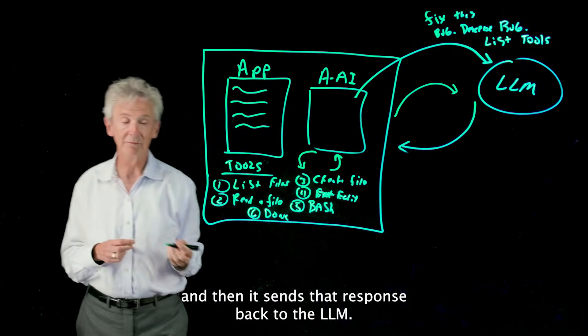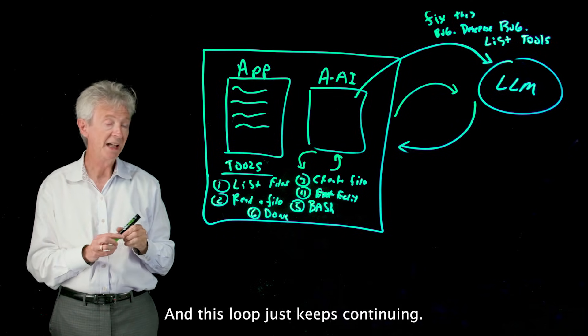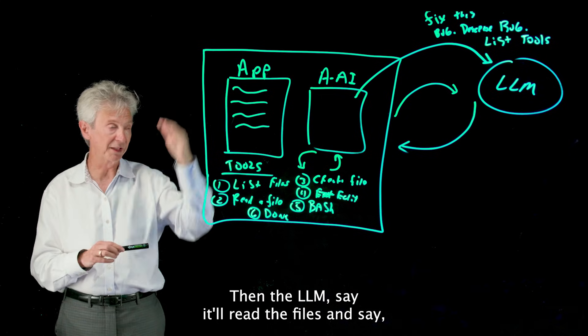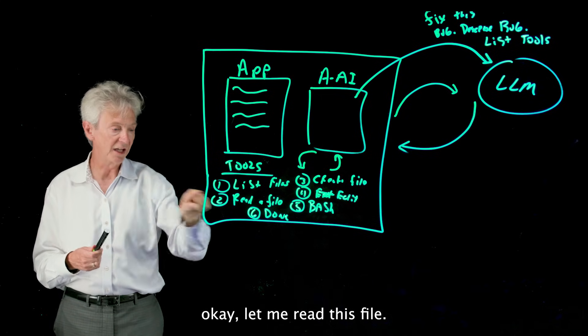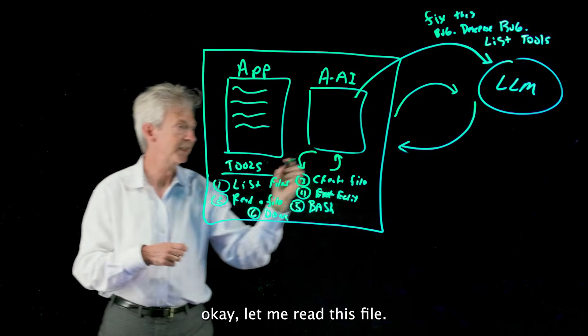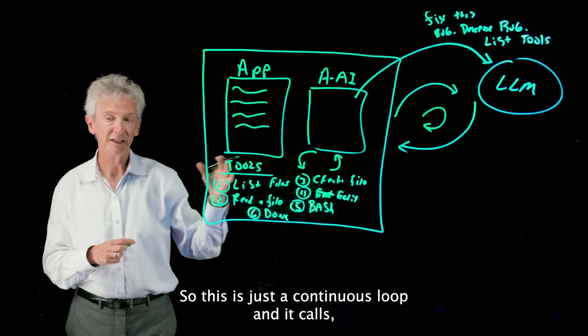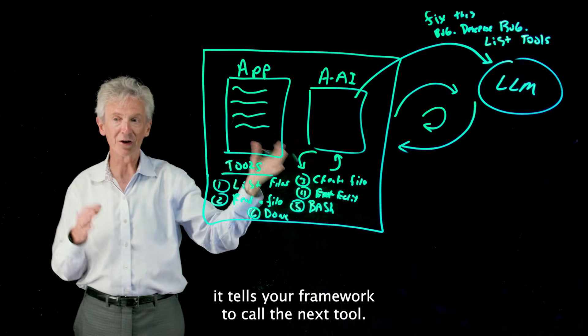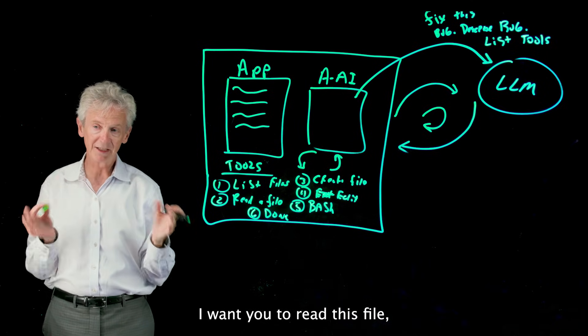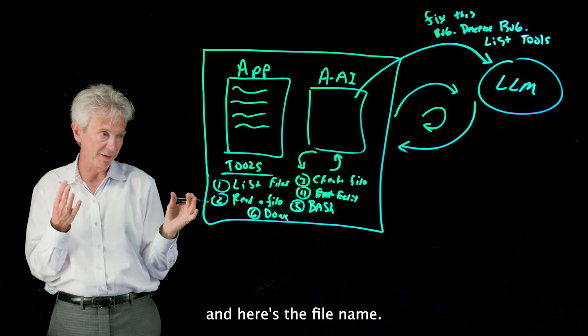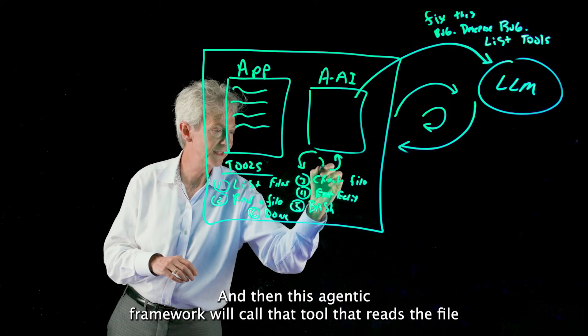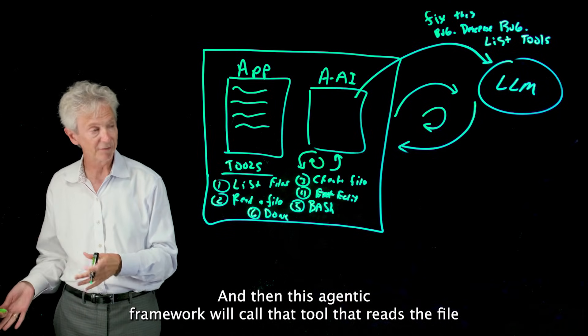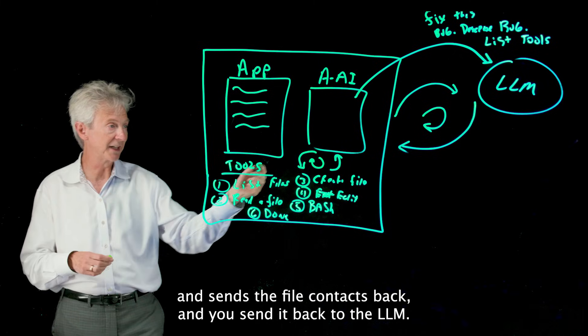And this loop just keeps continuing. Then the LLM will read the files and say, 'Okay, let me read this file.' So this is just a continuous loop and it tells your framework to call the next tool: 'I want you to read this file and here's the file name.' And then this agentic framework will call that tool that reads the file and sends the file contents back, and you send it back to the LLM.